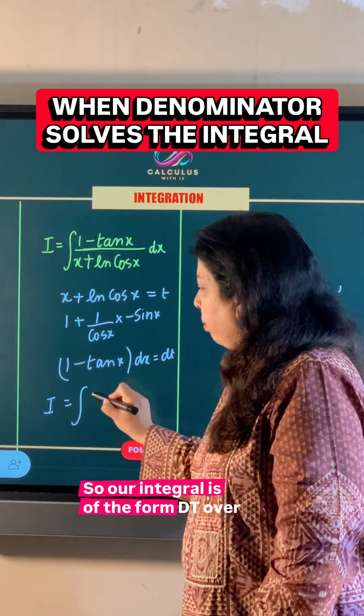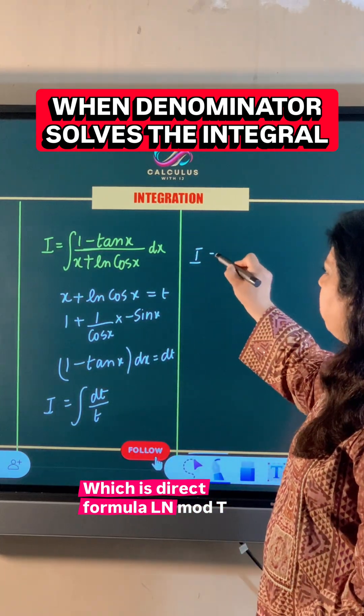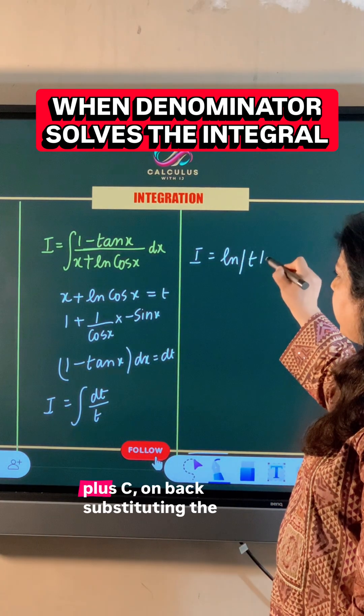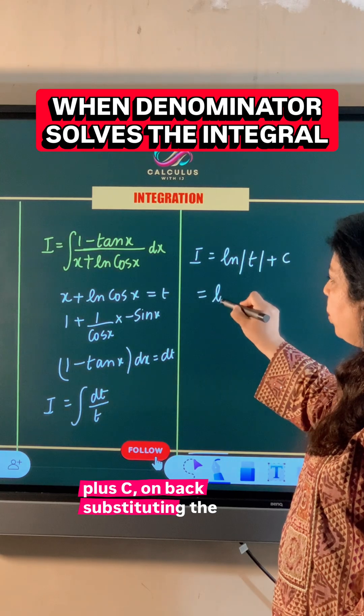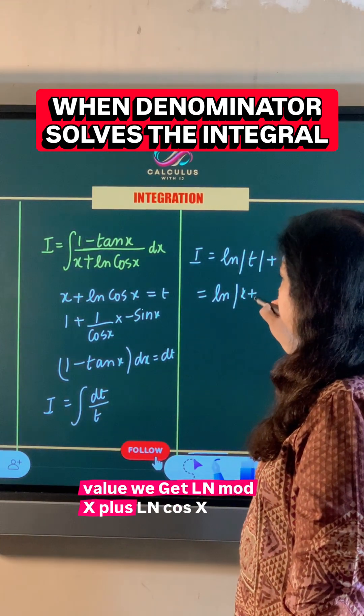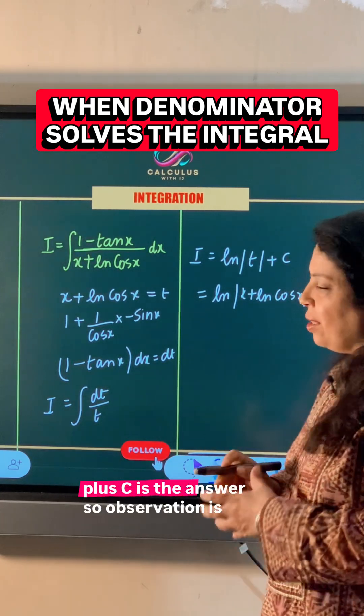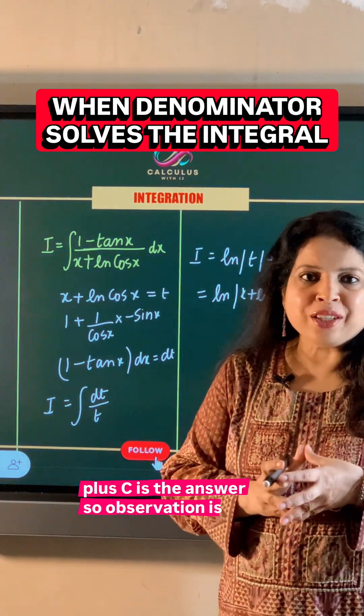...is of the form dt over t, which is direct formula ln mod t plus c. On back substituting the value we get ln mod x plus ln cos x plus c is the answer. So observation is quite important while solving integrals.